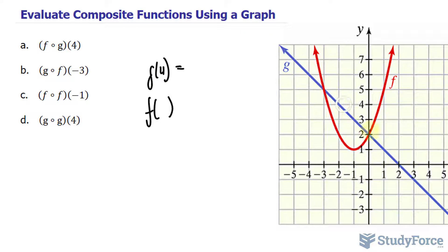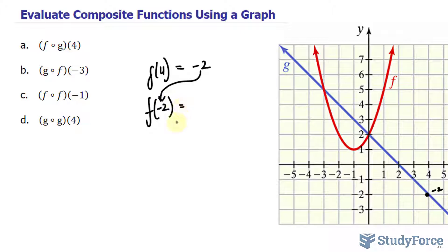g is this linear equation with a negative slope. g at 4 is negative 2. So I'll place negative 2 into here. f at negative 2 — it's a parabola. Negative 2 is right here. Its output is positive 2. So the answer for the first one is 2.